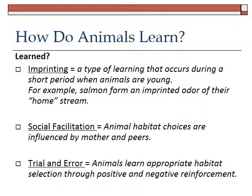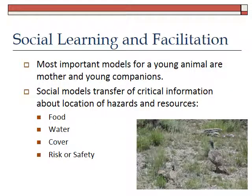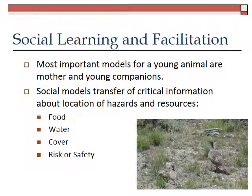Social facilitation, just as we talked about with diet selection, also happens in the case of habitats. And then there's trial and error, where animals individually interact with the environment and make decisions about what is positive or negative based on reinforcement. Just as with diets, the most important social model for animals is their mother. Young companions and peers are also important. Social models — whether peers or mother — transfer really critical information about hazards and resources in the environment, including where food, water, and cover are, and where there is risk from or safety from predators. Here's a sage-grouse hen with her chicks, apparently showing them about the resources in that environment.